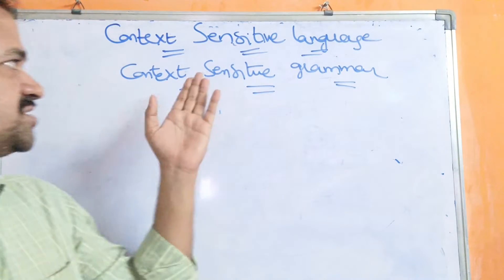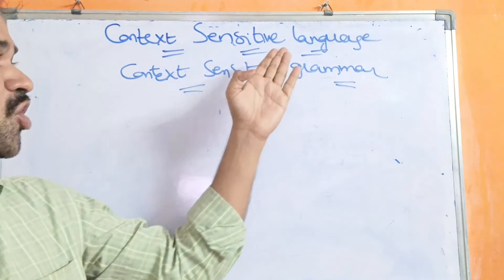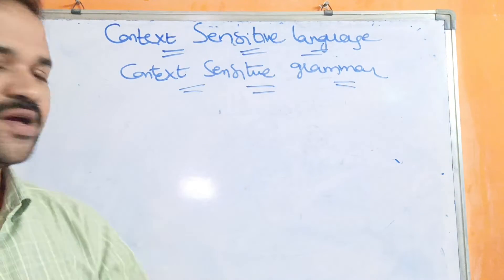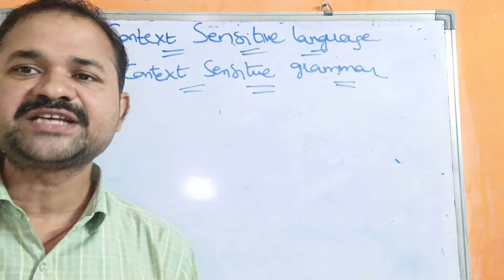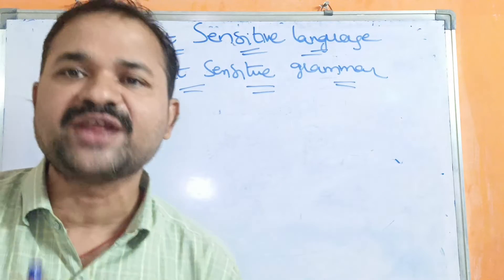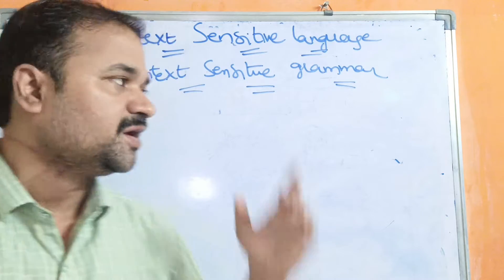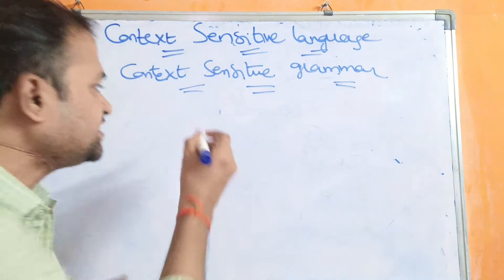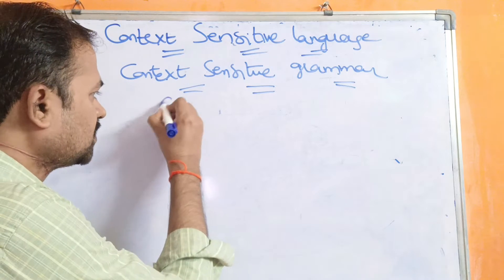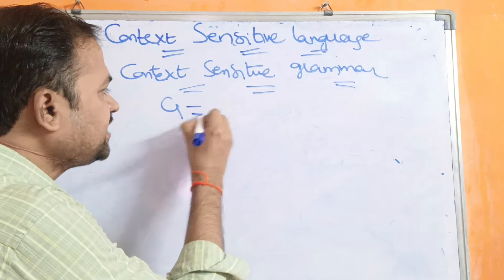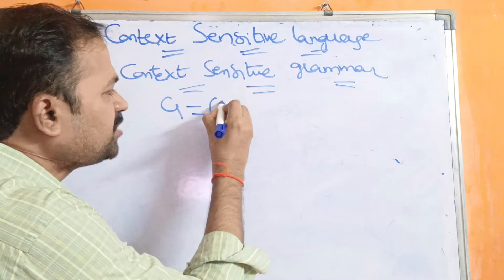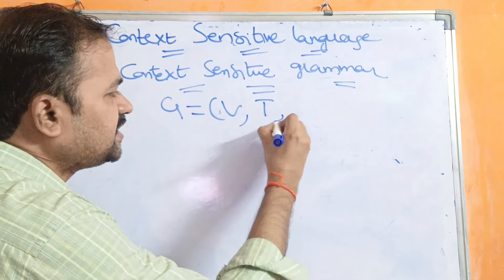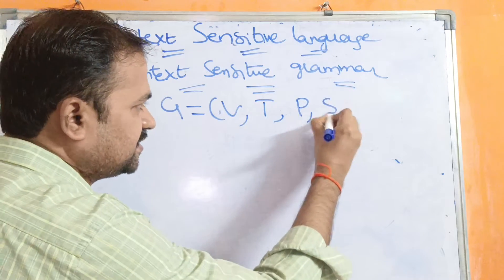Now let's see this concept: context sensitive language and context sensitive grammar. A context sensitive grammar is represented by G. It contains mainly four tuples: V, T, P, S.